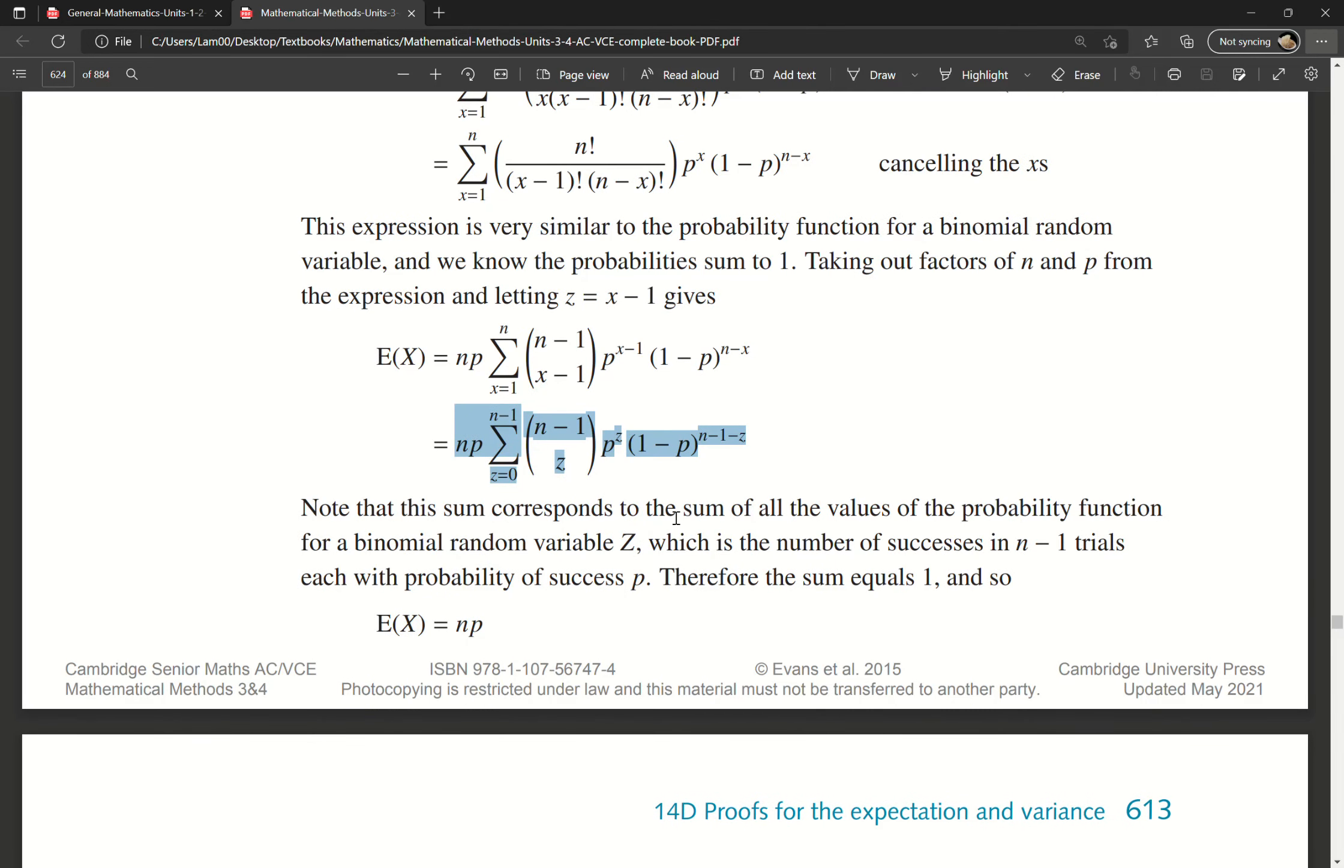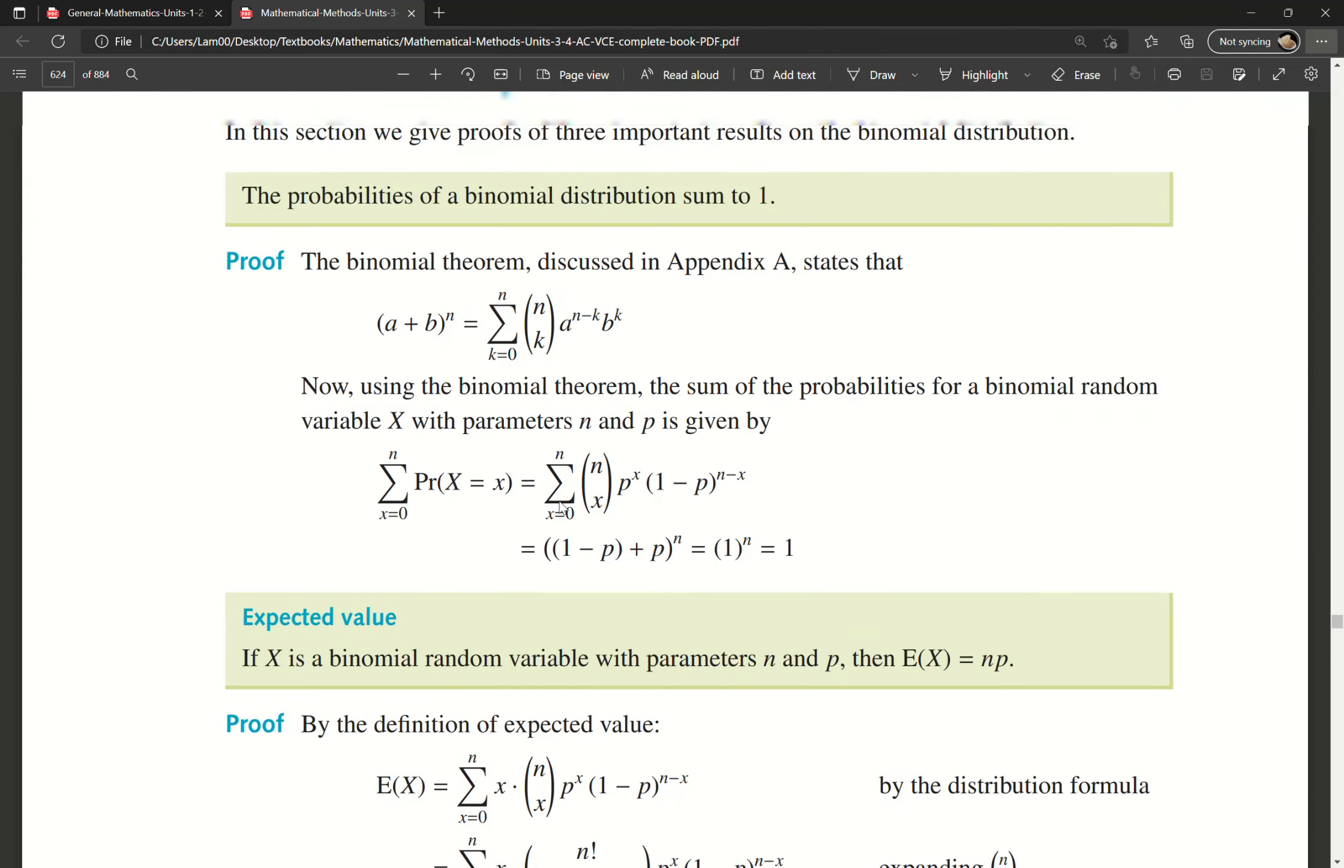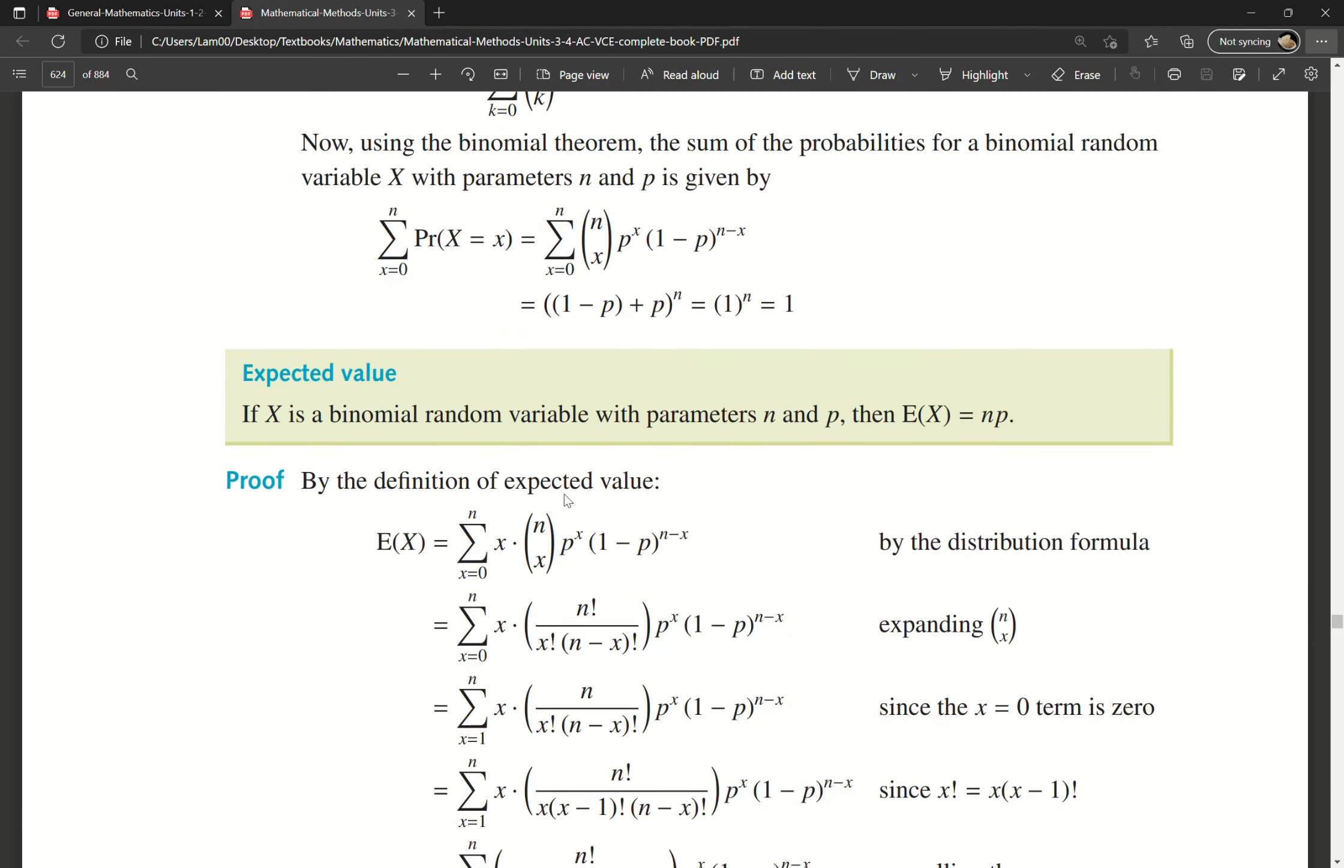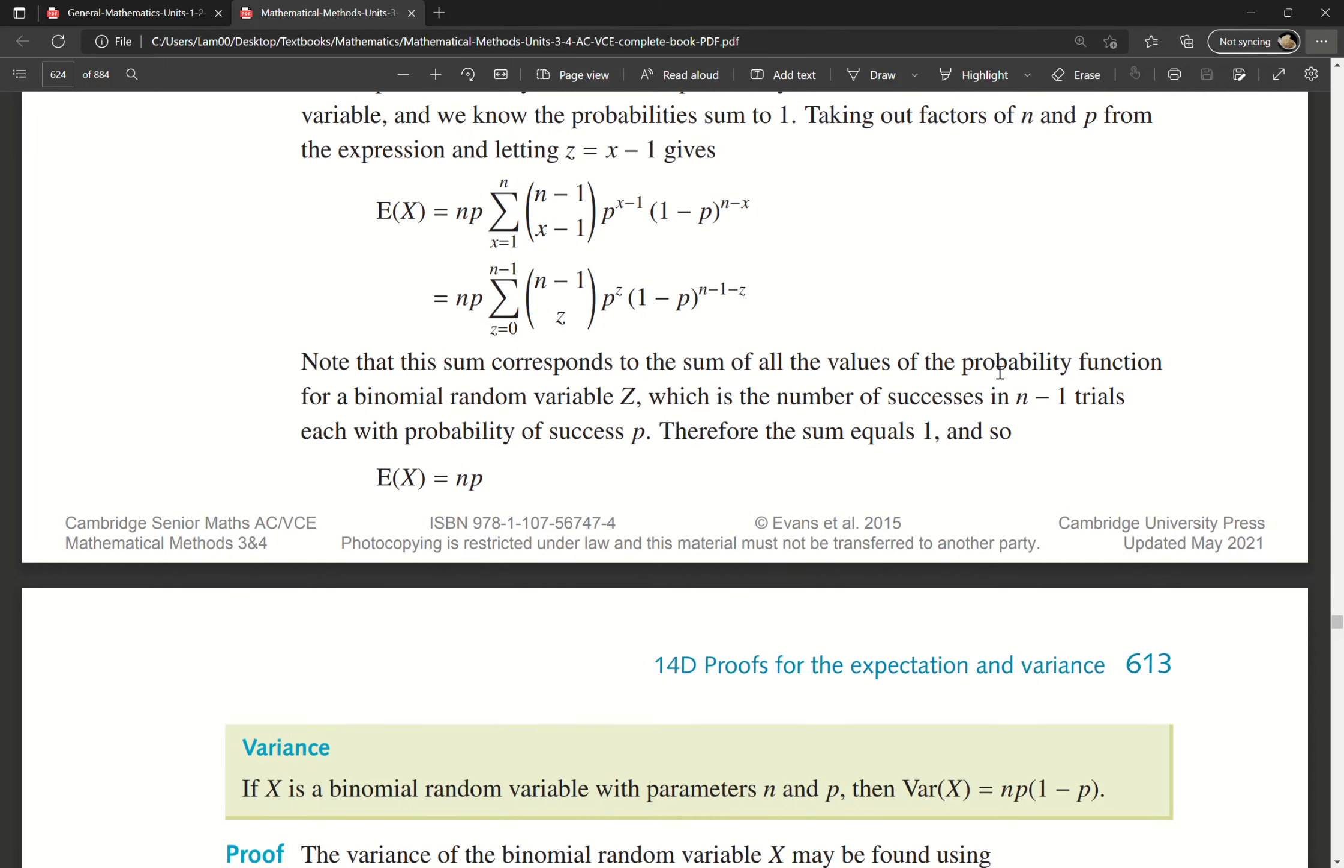Note that the sum corresponds to the sum of all values of the probability function for a binomial random variable Z, which is the number of successes in n-1 trials with probability of success p. Because this sum equals 1, once you remove that, we end up with E(X) = np. Essentially, all these theorems – the binomial distribution, the sum equaling 1, and E(X) = np – come from the binomial theorem.